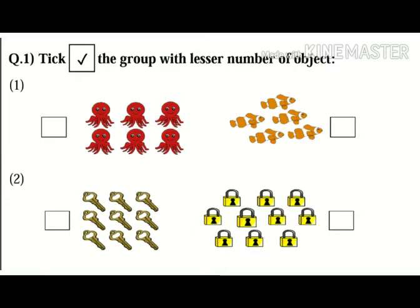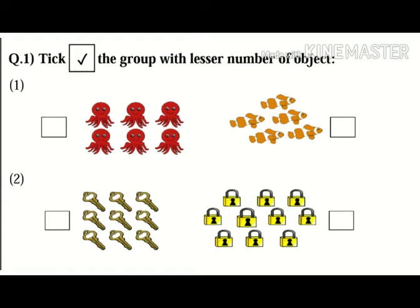On the left hand side there are six octopuses — yes, six. And on the right hand side, how many fish are there? Correct, there are five fish. So which is the lesser number — six or five? Five! Correct. So we are going to put a tick mark in the box besides the fish.